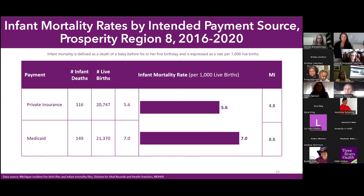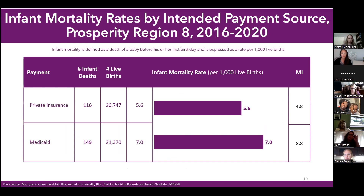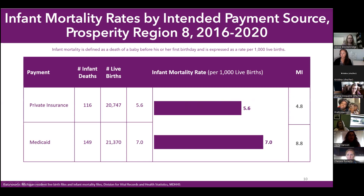This slide shows the infant mortality rate in Region 8 by intended payment source at birth during 2016 to 2020. Among mothers who intended to pay through Medicaid, the infant mortality rate was 7 deaths per 1,000 live births — greater than the rate among those who intended to pay through private insurance at 5.6 per 1,000. Statewide the disparity is slightly greater: 8.8 versus 4.8 per 1,000. Within the region the rate is 1.25 times higher in the Medicaid group; statewide it is 1.8 times higher.